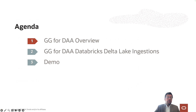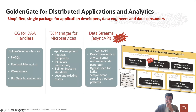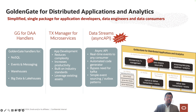Let's start with an overview of GoldenGate for Distributed Applications and Analytics. It is a single GoldenGate product package that you can use for your strategic use cases. You can ingest real-time data into data fabric environments, into delta lakes, into NoSQL data stores, and into event messaging platforms.